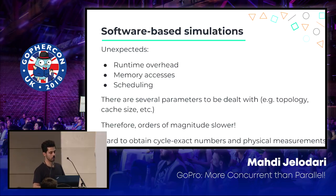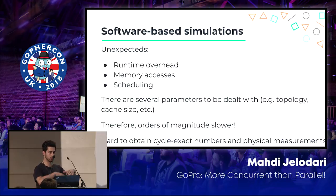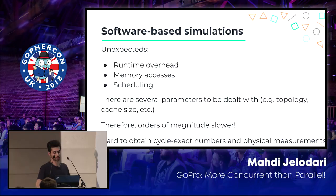One of the major benefits of hardware is when you have resources allocated individually for your processes — they have their own memory. When they're running concurrently they have their own resources, no matter how much detail you have. They get their own resources as long as you provide them in the hardware.